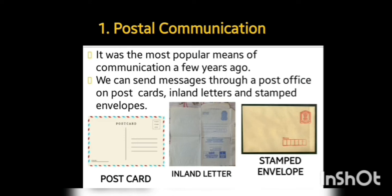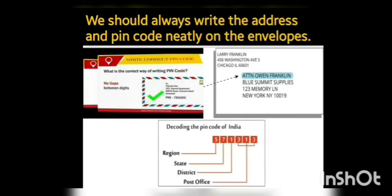With the help of all these, people used to write messages and letters to convey them to others. They used to send them to the post office, and the postman would collect and deliver them to the right person. It is very important that we always write the address and pin code neatly on the envelopes, with no gaps between the digits. You can also write it in capitals, as seen in the second picture — that will look more clear and visible for the postman to read it and send it to the correct person.